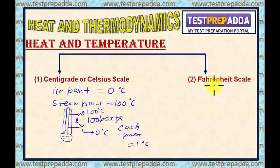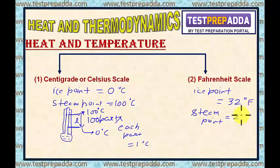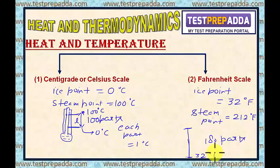Now consider the Fahrenheit scale. In this case, the ice point is taken as 32°F and the steam point is taken as 212°F. The length of the mercury column between these two points is divided into 180 equal parts.